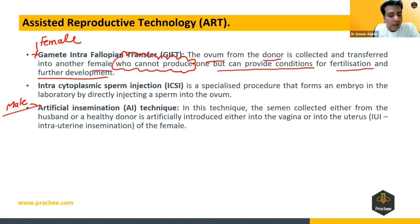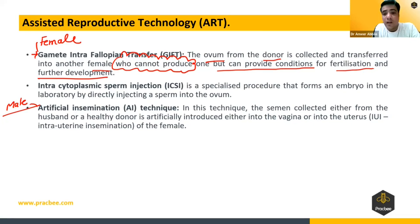Suppose there is a lady who is ovulating but whose uterus is not suitable for implantation. In that case she should opt for a surrogate mother, and the appropriate technique is used.